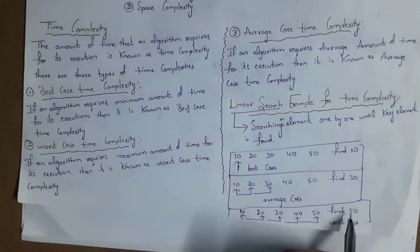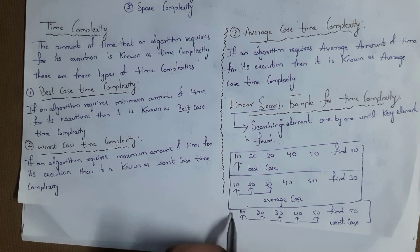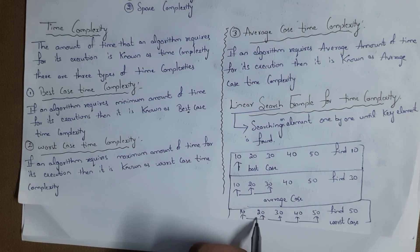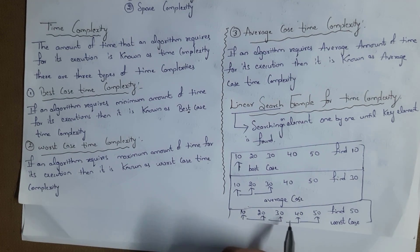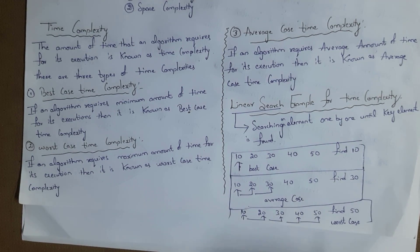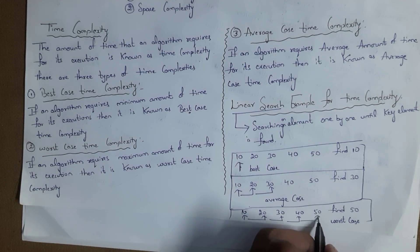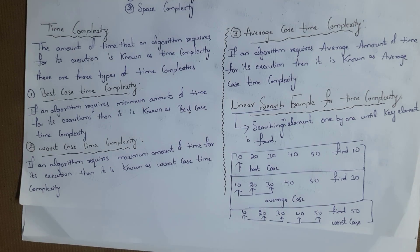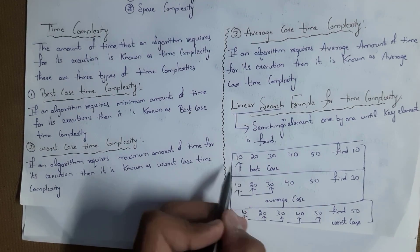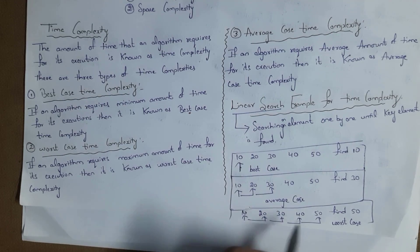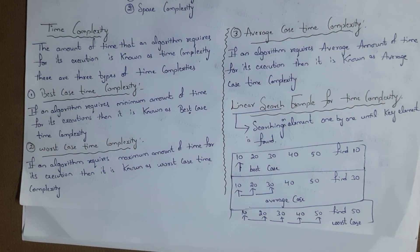In the third example, I want to find element 50. We start with the first element 10 — 50 is not present. We move forward: not in second, not in third, not in fourth position. We finally got element 50 at the last position, so time consumed is more. This is known as worst case time complexity because it took maximum time, whereas finding at the first position is best case.